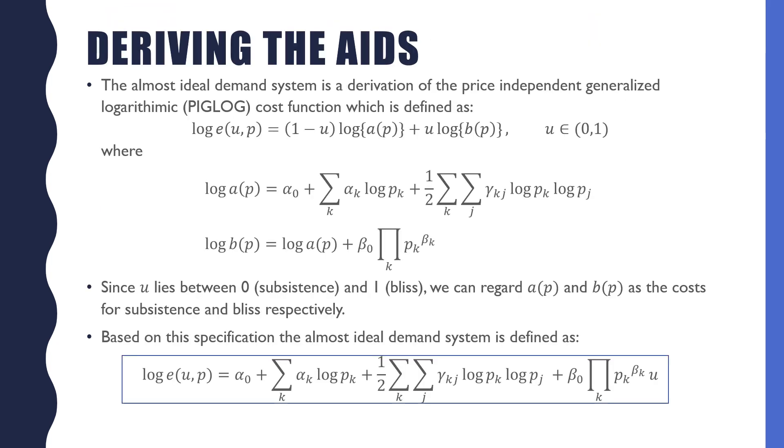The Almost Ideal Demand System is a derivation of the price-independent generalized logarithmic cost function, which is also referred to as the PIGLOG cost function, which is defined as log c(u,p) equals (1-u) log a(p) plus u log b(p), where u goes from 0 to 1.